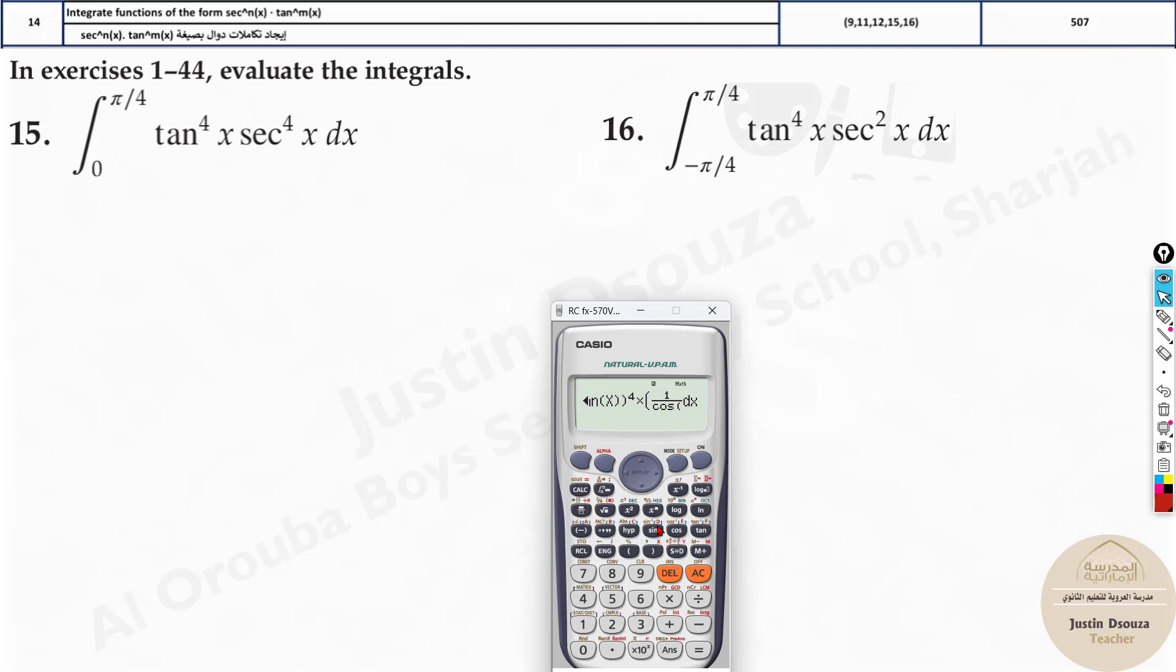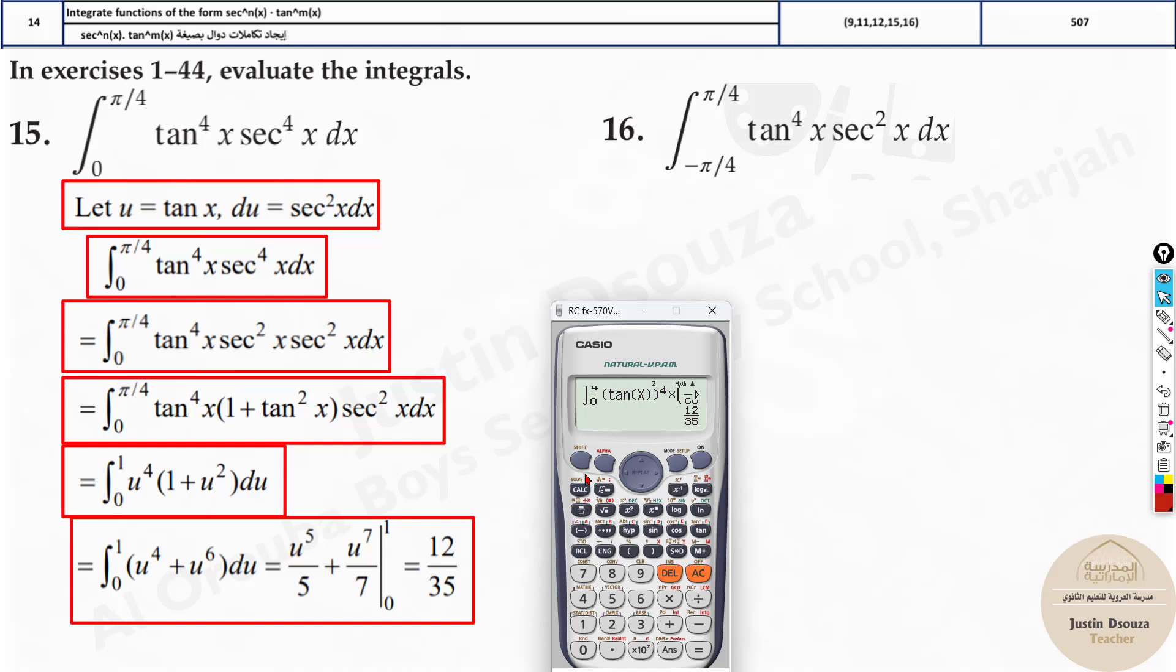1 divided by cosine x. Because secant is 1 by cosine x. Now close the bracket and raise it to the power 4. And it's 0 to pi by 4, right? Here it's pi shift and pi by 4. The answer must be 12 by 35. You might feel it's very easy, yes. But try to do it by yourselves. You might get some error at times.